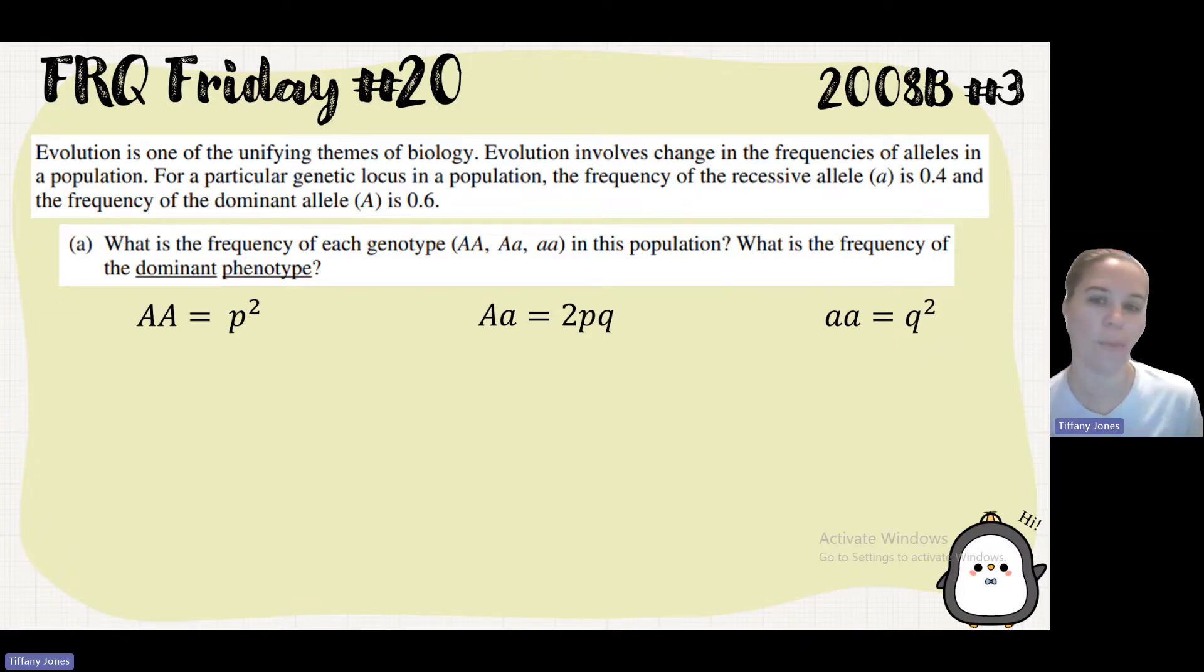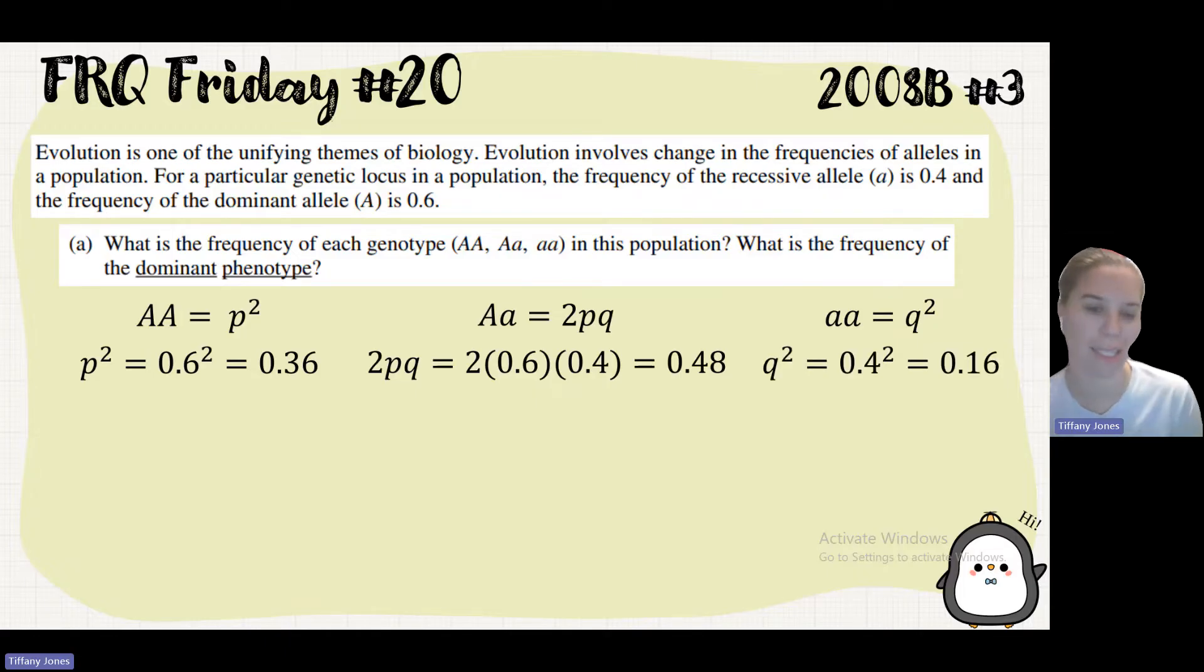So after this, we'll sub in what we know. We know that capital A is 0.6. So p would be 0.6. So 0.6 squared is 0.36. Since I already know p is 0.6, and I know that q is 0.4, I can sub those in. So 2 times 0.6 times 0.4 gives me 0.48. And then my q is 0.4. So my q squared is going to be 0.16.